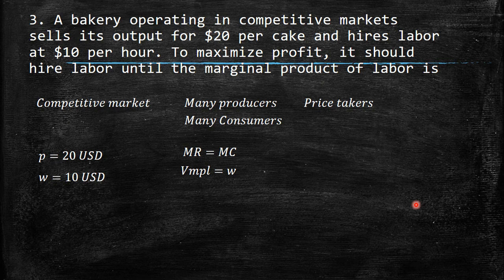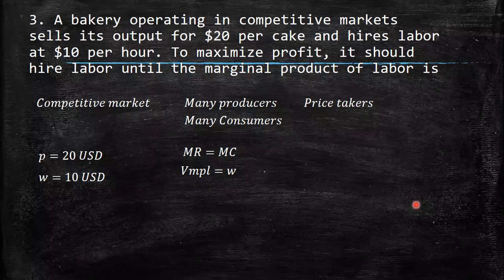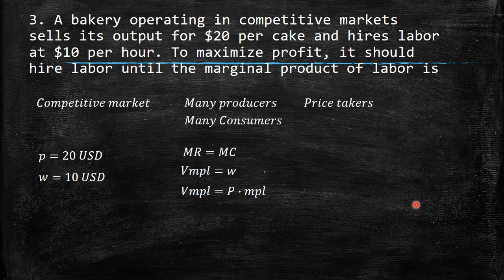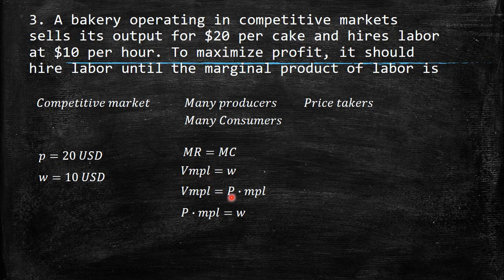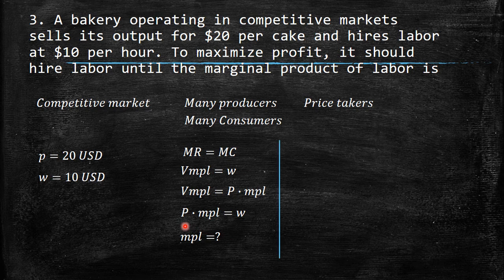In any market, what you want to arrive at is marginal revenue equal to marginal cost. The marginal revenue at the end is the value of the marginal product of labor — the income that an additional worker brings to the firm. The cost of that labor is the wage. We know that the value of the marginal product of labor equals price times the marginal product of labor. Setting that equal to wage W gives us one equation with one variable.